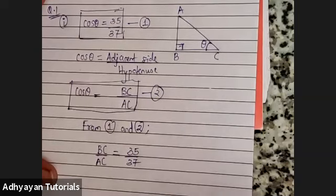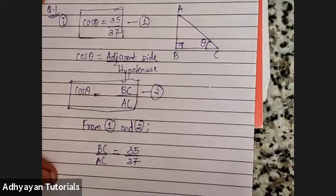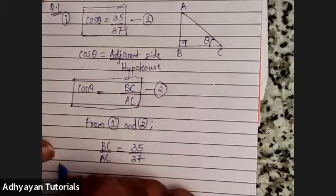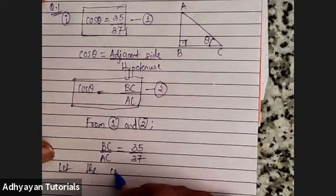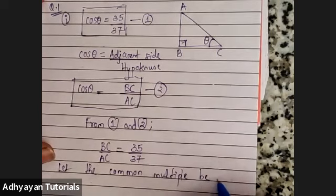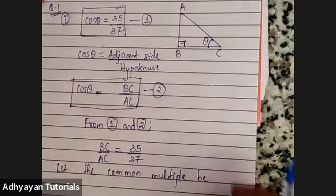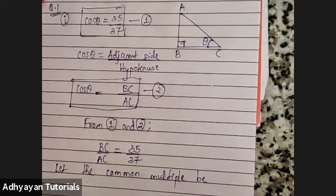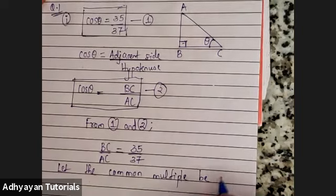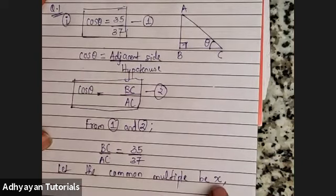In maths, whenever we have a ratio, the first thing that comes to mind is: let the common multiple be x. Most school teachers use k and call it the k-method, but it is absolutely okay to use any other variable. I'll be using x here. So let the common multiple be x.